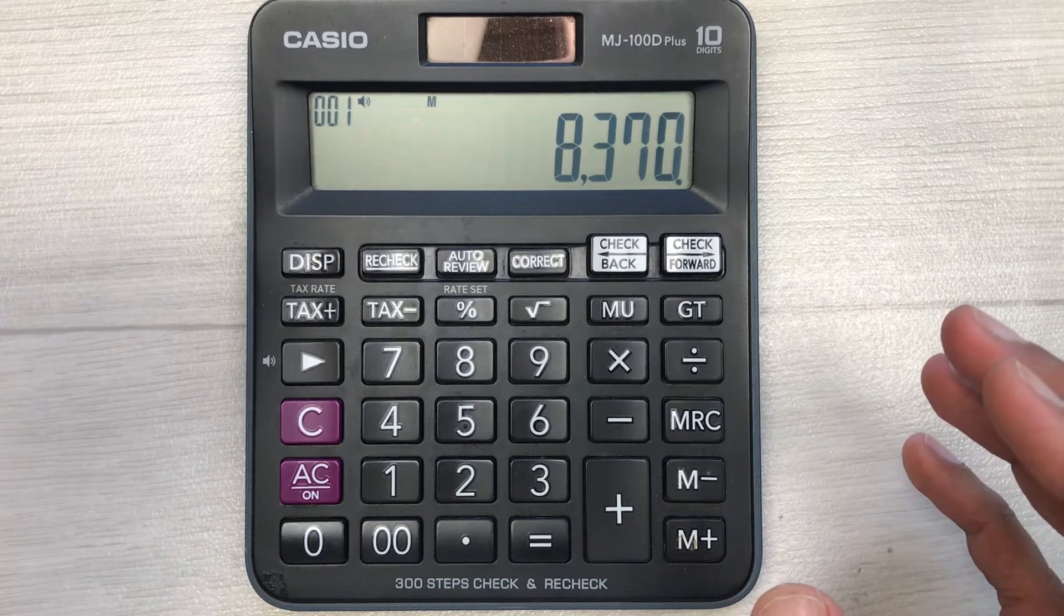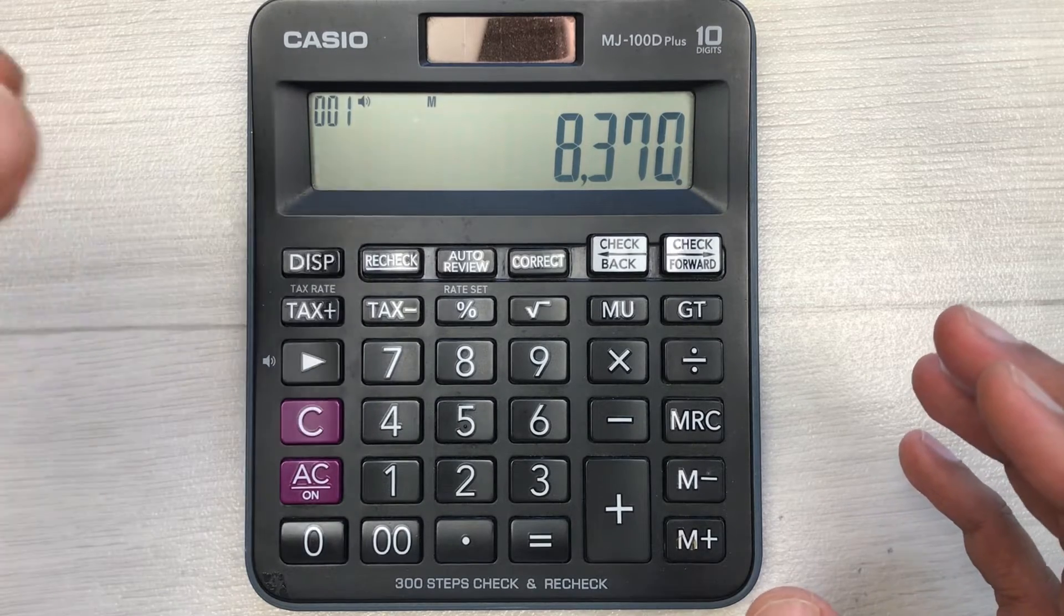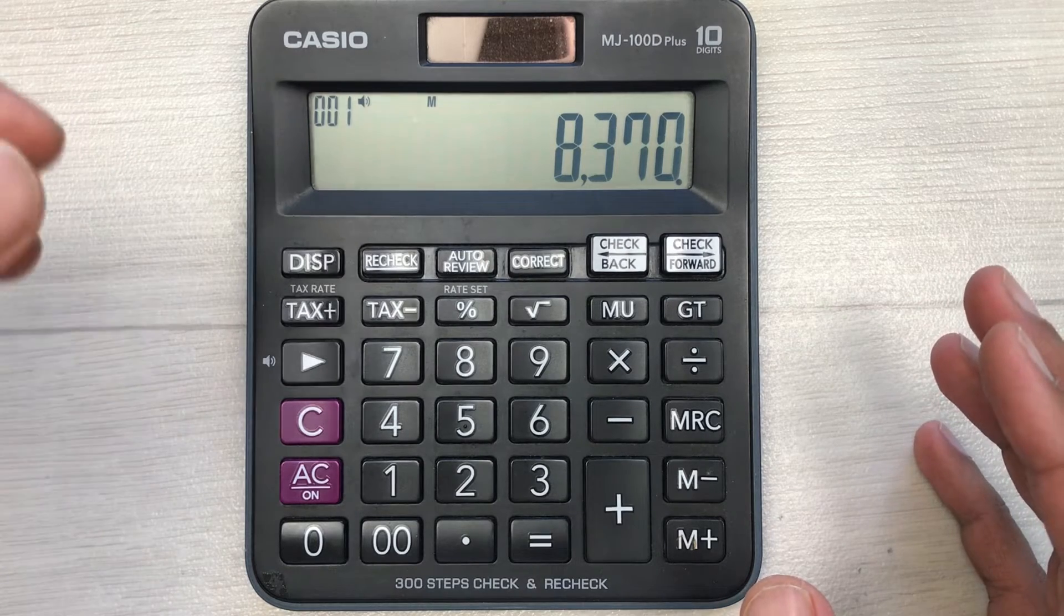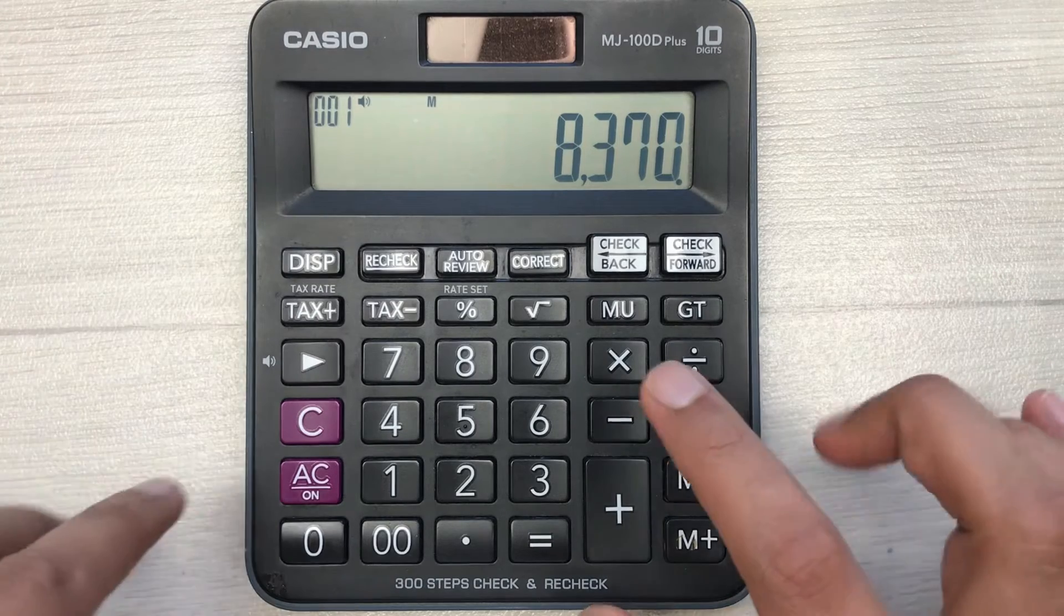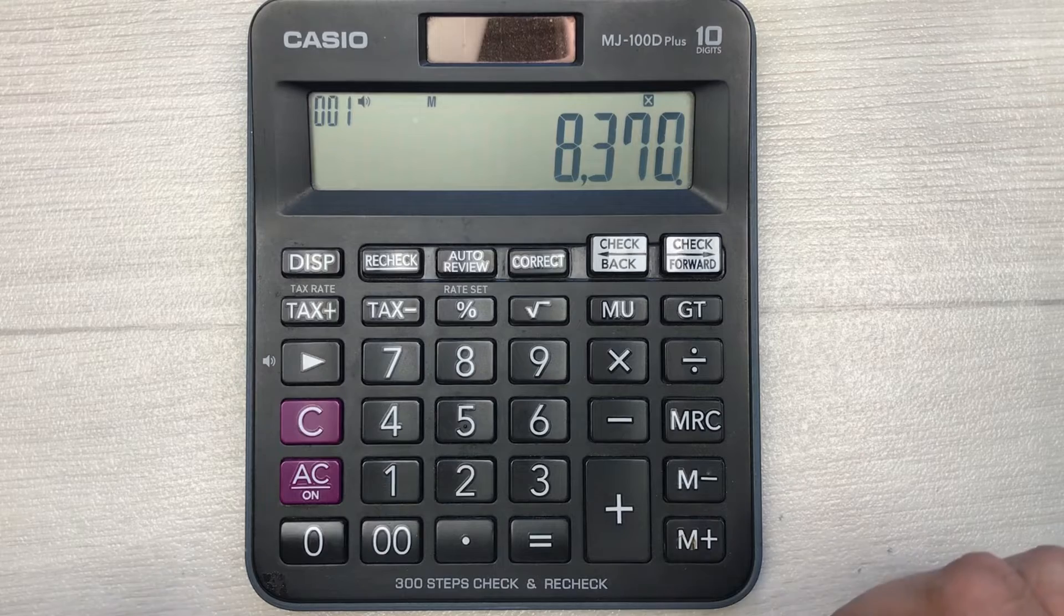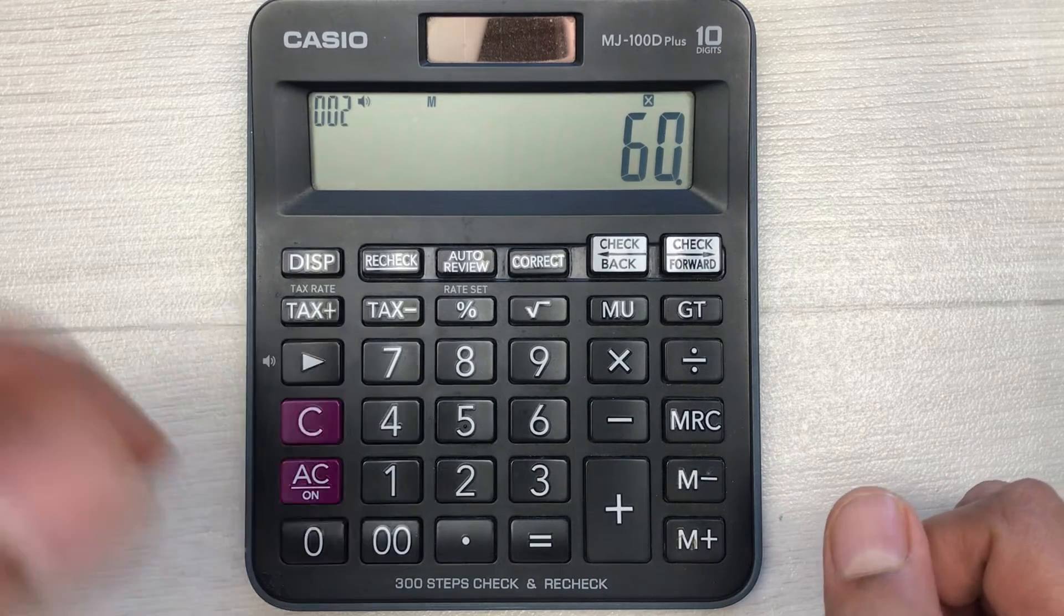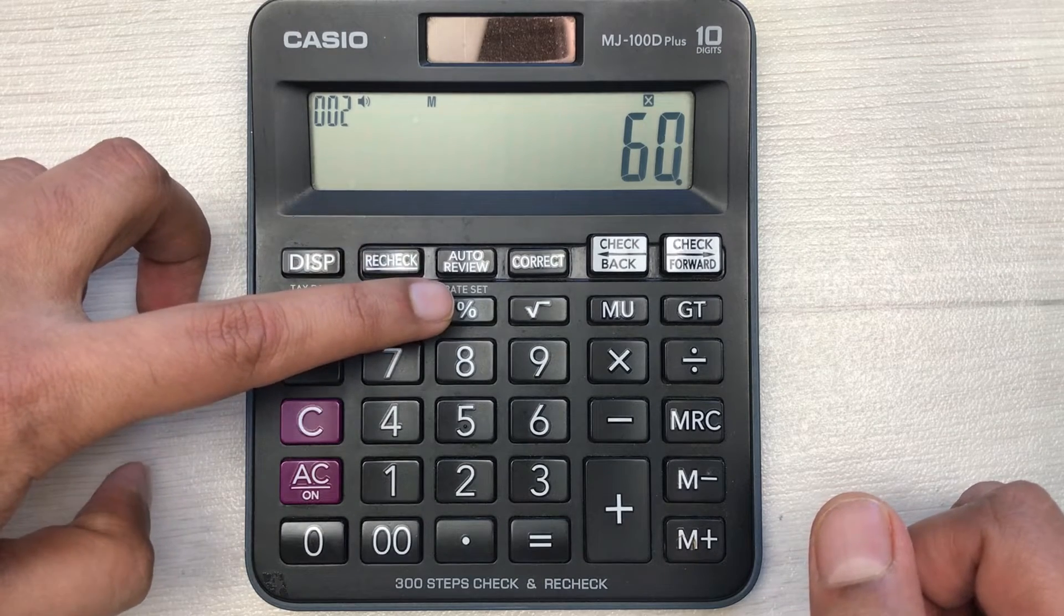The shopkeeper says to you that he will give you 40% discount. So how can you find out the final amount after 40% discount? You can find it out in two simple steps. First of all, you have to press this multiply button and then you have to multiply it with 60.